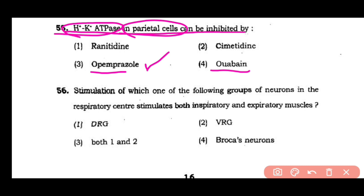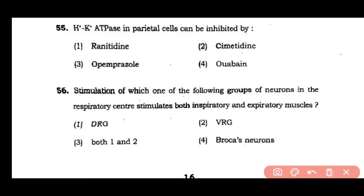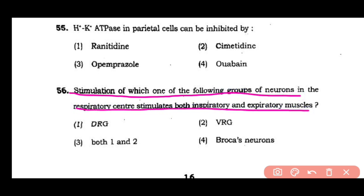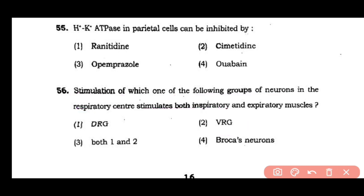Question number 56: Stimulation of one of the following groups of neurons in the respiratory center stimulates both inspiratory and expiratory muscles: DRG, VRG, both 1 and 2, or Bötzinger neurons. The correct answer is option 2 — the VRG (ventral respiratory group), when stimulated, activates both inspiratory and expiratory muscles.